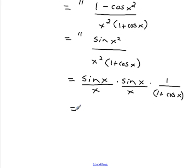You might ask yourself: the funnel effect doesn't seem to be coming into play here because my limit's getting bigger. In actuality it isn't, because the funnel effect is not only about getting fewer terms — it's also about whether your powers are going down. The funnel effect is really two things: are you getting fewer terms, and are your powers decreasing? Here, sine squared x went down by one factor, so I'm still following the funnel effect and still on the right track.